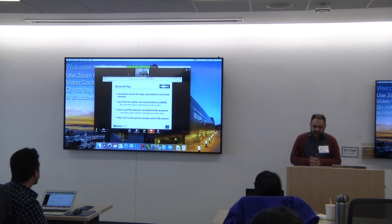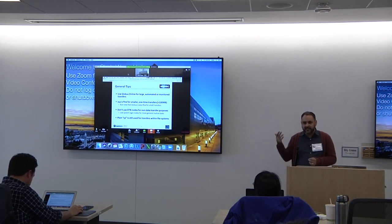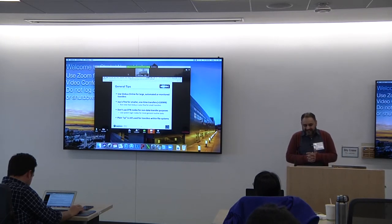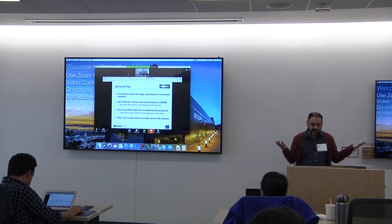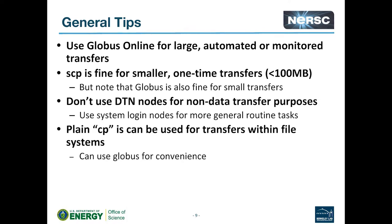A few tips: use Globus for large, automated, or monitored transfers. You can use SCP to move files for things under about 100 megabytes — beyond that it'll just spin for a long time, requiring you to keep your window open, and SCP is slower than Globus anyway. Use SCP for small files; use Globus for managed transfers. Also, don't use the DTN nodes for anything other than data transfer — don't compile code or run other services on them. They're a shared resource and misusing them impacts other people's performance. You can still use regular copy to move things between file systems.